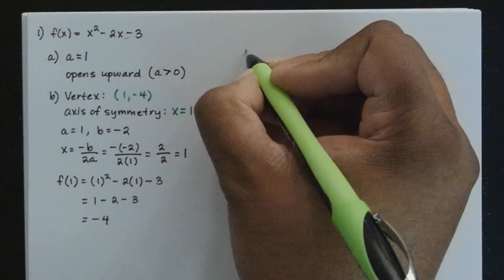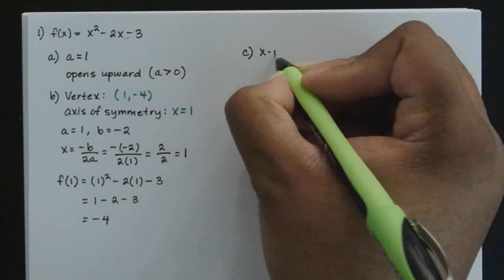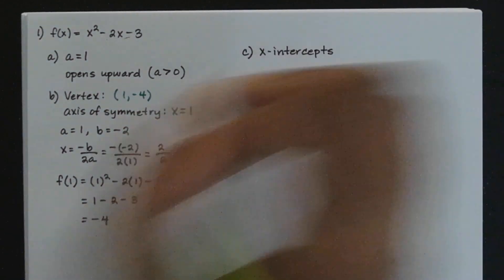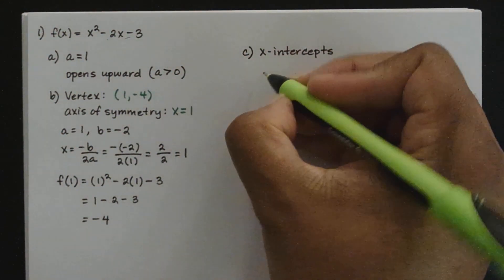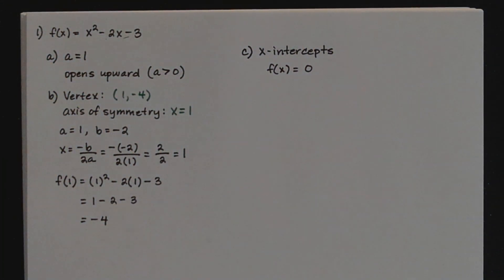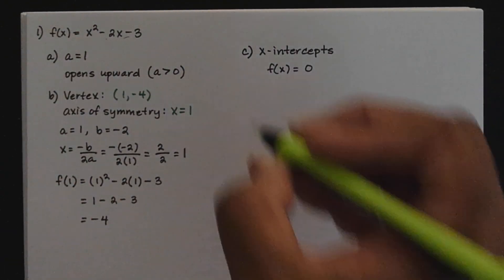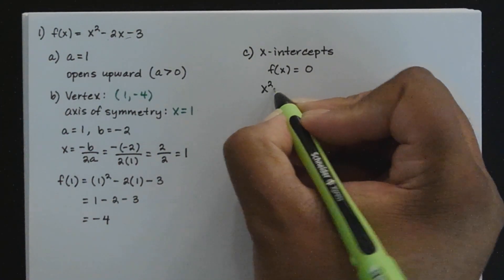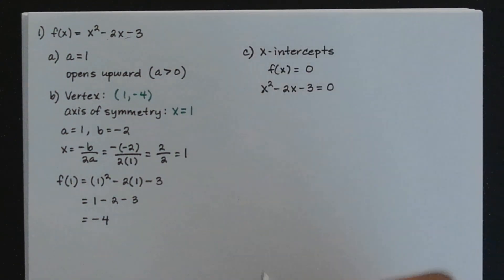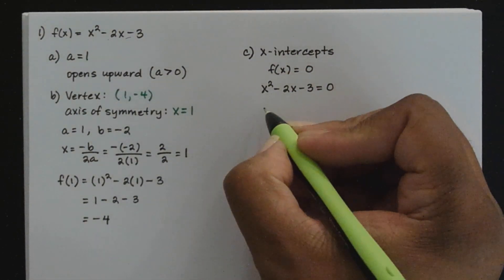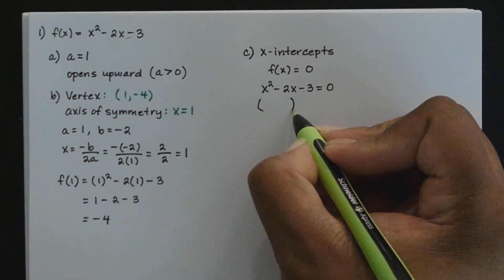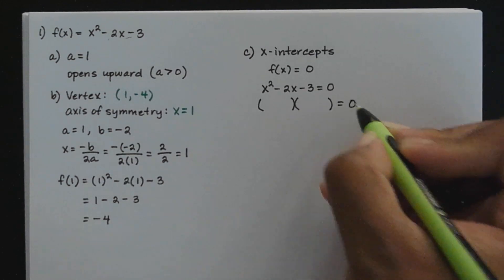Part C is to identify the x-intercepts. When you identify the x-intercepts, you let f of x be equal to 0 and solve for x. Here f of x is x squared minus 2x minus 3. Set that equal to 0. Since this is a quadratic equation, we'll go ahead and factor that into two binomials.